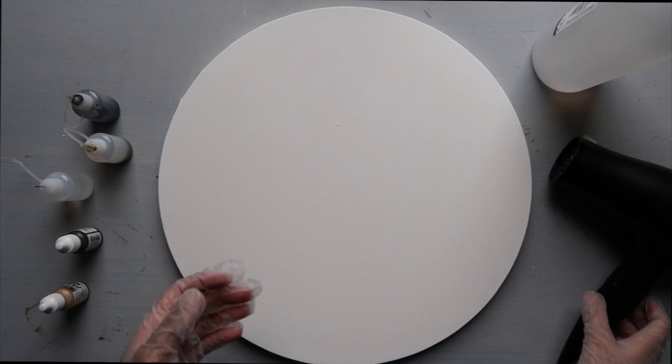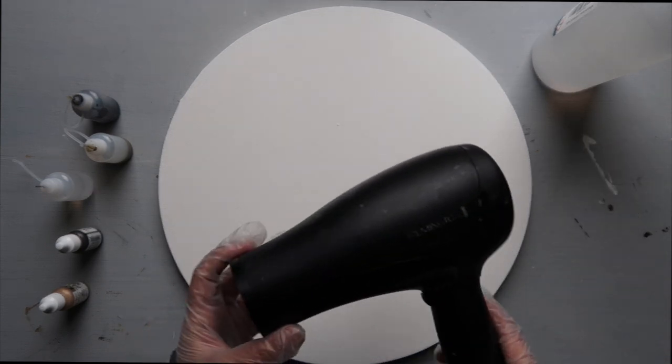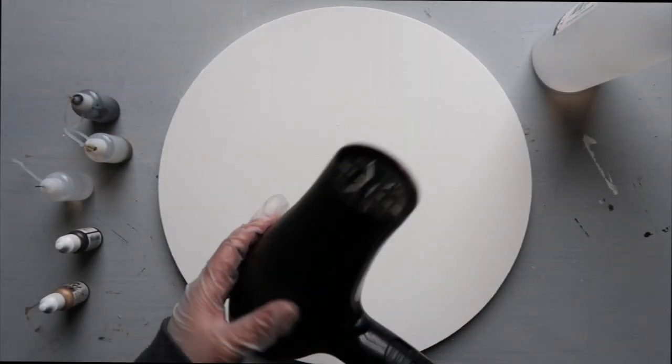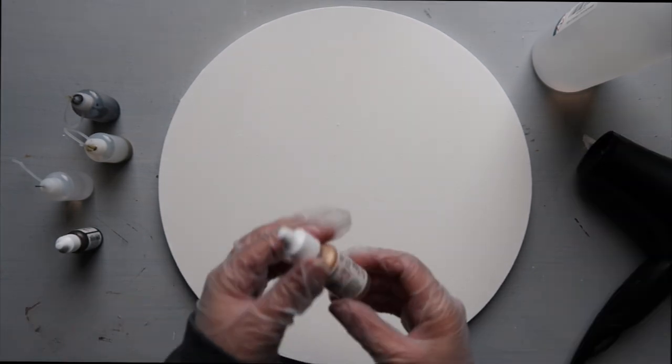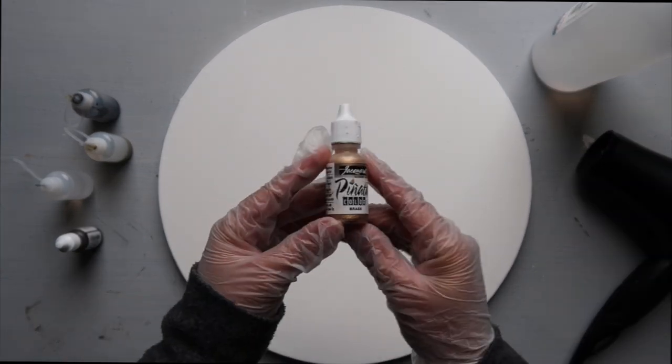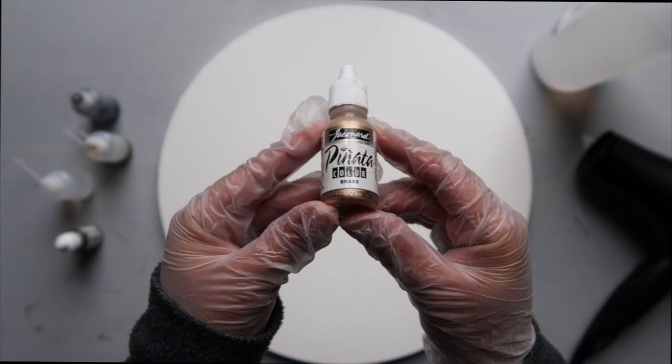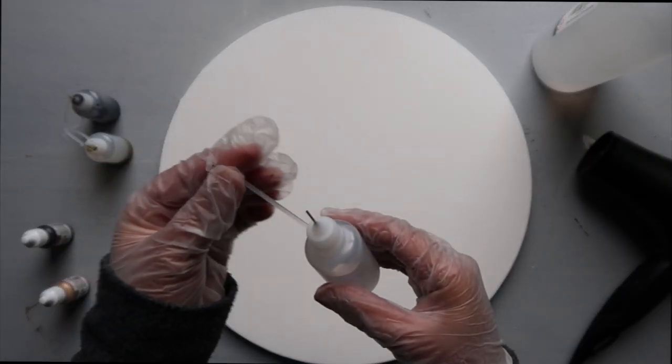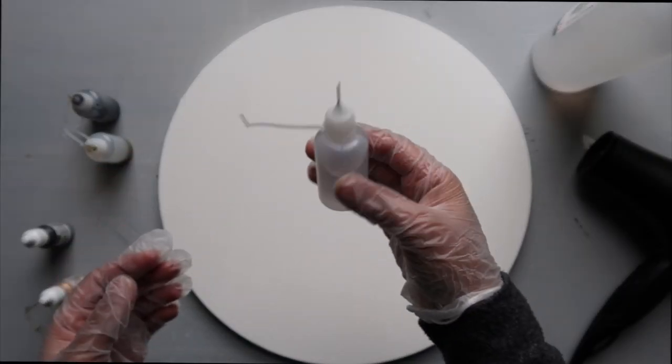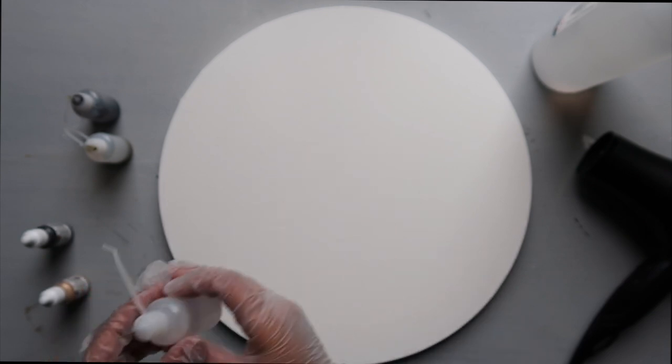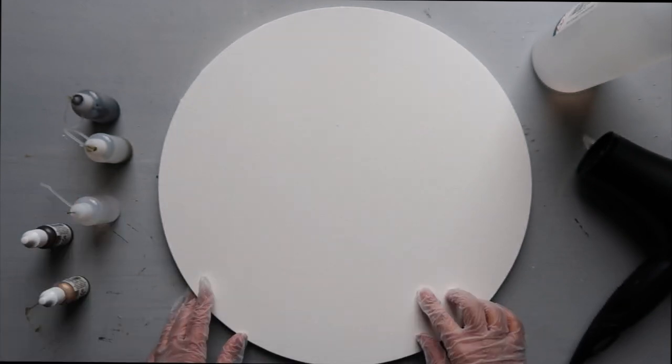I'll also be using a hairdryer on low medium setting, not very hot, not very cold. And of course you will need some alcohol ink. Today I'll be using brass and black. And it would also be easier if you take out the rubbing alcohol into a smaller bottle, and that's everything that we're going to need today.